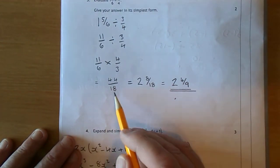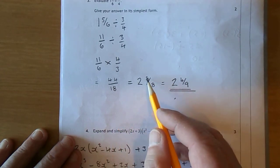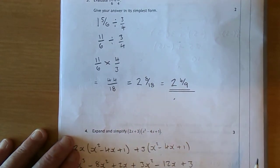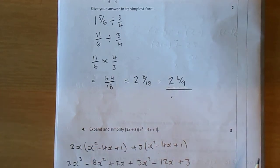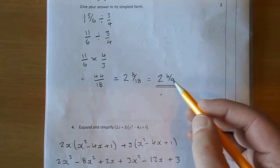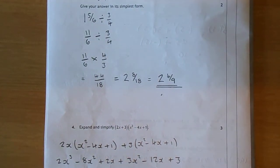Simplify it. 18 goes into 44 twice with a remainder of 8, and whenever you've got a fraction you must simplify it when it's like an answer. So 8 over 18 is 4 over 9, so it's 2 and 4 over 9.